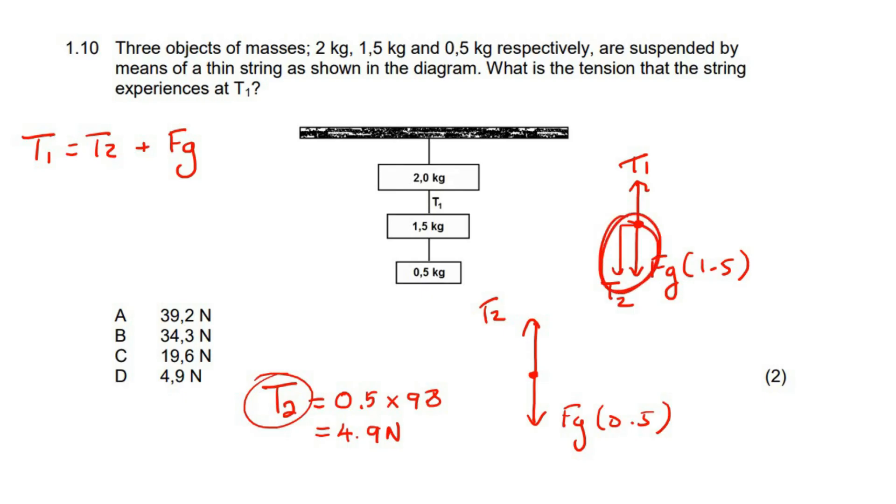So we can say that T1 must be the same as T2 plus the FG of the 1.5 kilogram object. These two acting down must be the same as the forces acting up, otherwise there's an imbalance.